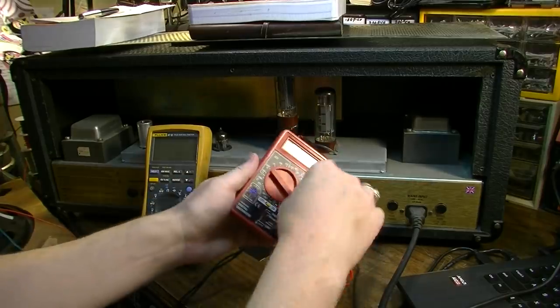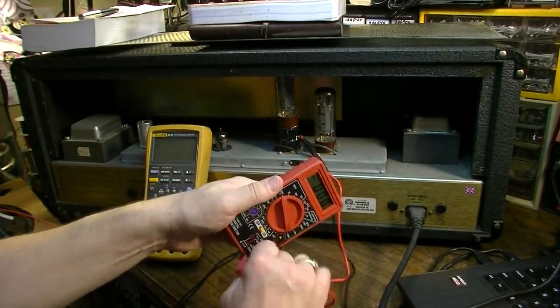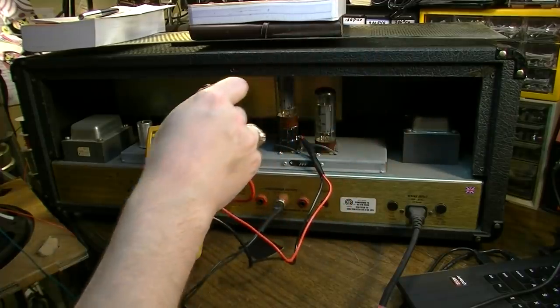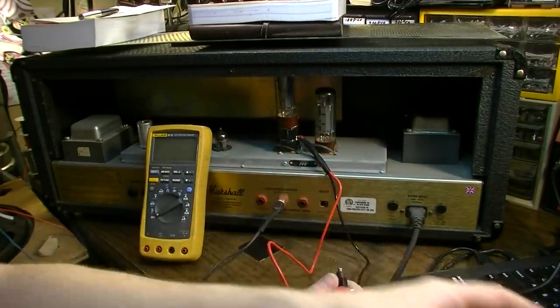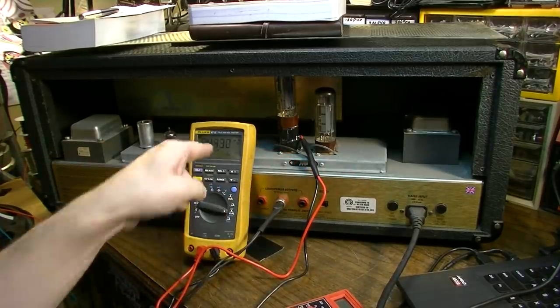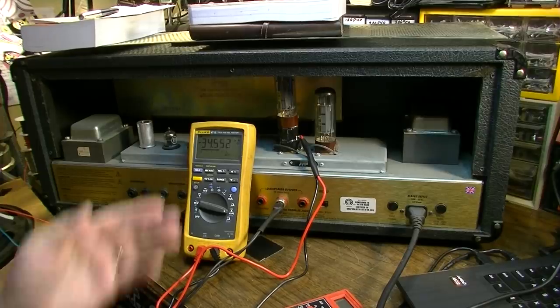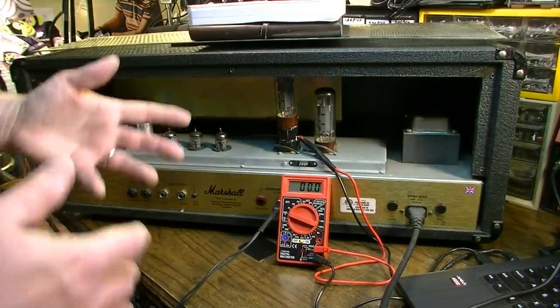So what we want to do is we want to test the accuracy of this meter with my Fluke. Now my Fluke is probably going to be a lot more accurate than this thing here. 35 is what we got on this one. 35 or thereabouts and we're getting 34.4, 34.5. So round it up to 35. That's pretty damn accurate. So yeah, that's the way this works.